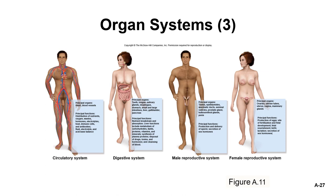For the male reproductive system: main organs are the testes, ductus deferens, vas deferens, and penis; main functions are production of hormones and procreation. For the female reproductive system: main organs are the ovaries, uterus, and vagina; main functions are also production of hormones and procreation.